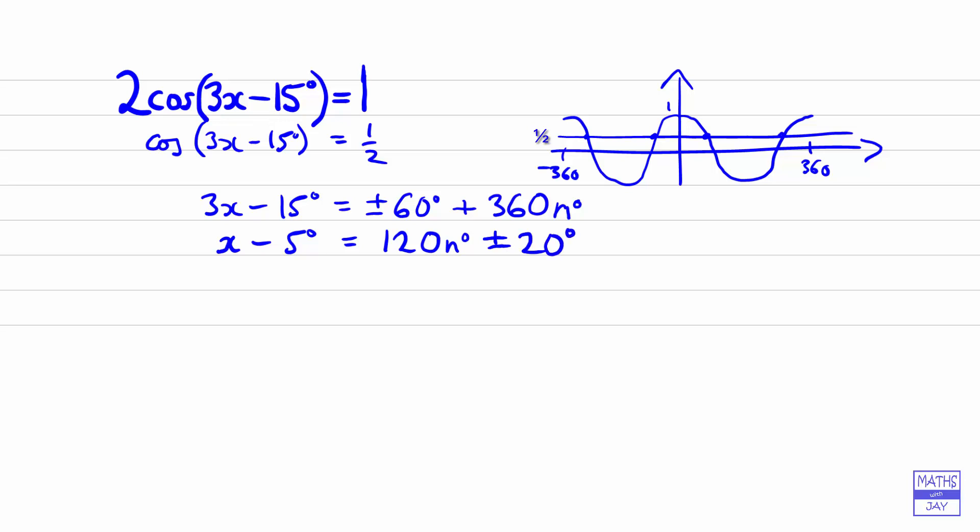So we've just divided the whole thing through by 3, and then we're going to add on 5 to both sides. So x is going to be—we've still got 120n, and then the plus 20 plus 5 gives us plus 25, and similarly, adding 5 onto minus 20 we get minus 15 degrees there.